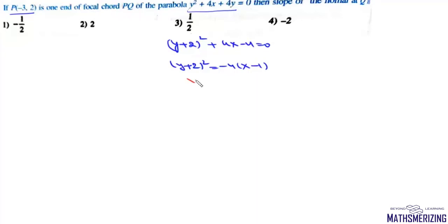So we'll compare it with the standard form it'll be capital Y square equals minus 4a capital X.